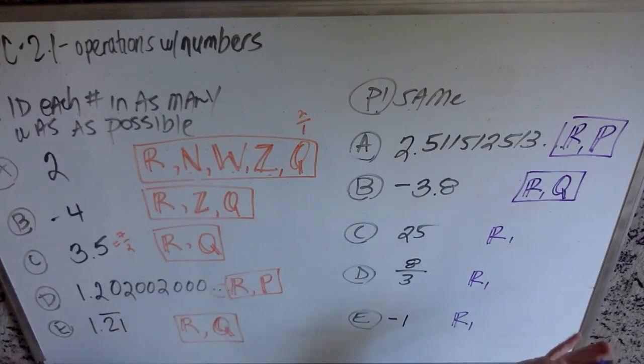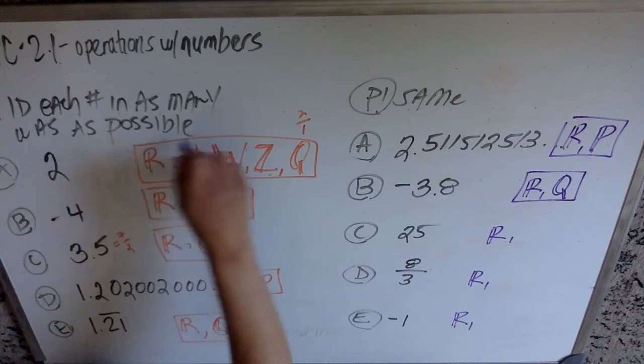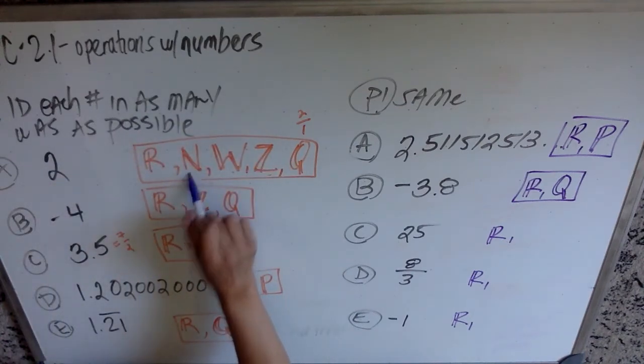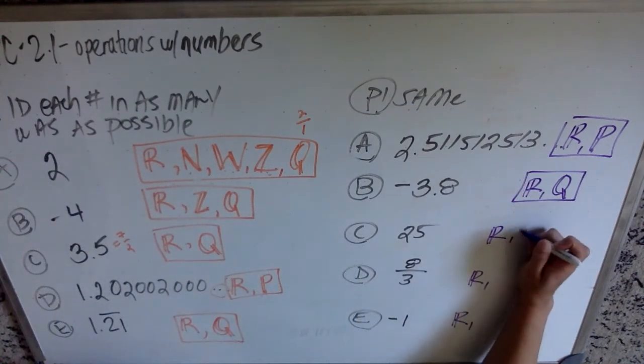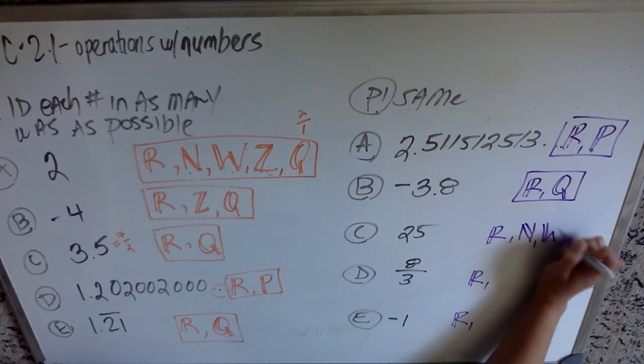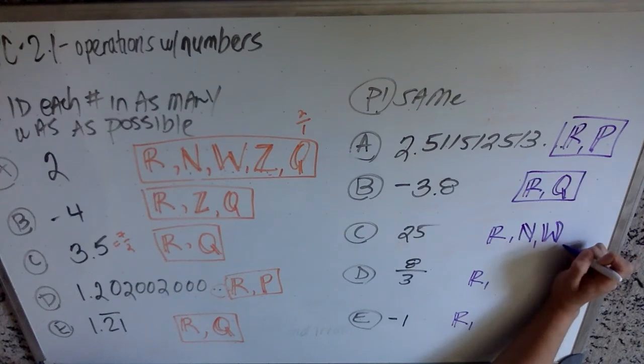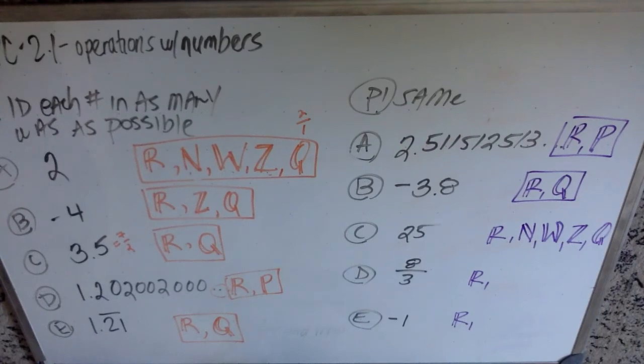25 is all of these things. 25 is going to be the same as up here, where we had, 25 is a counting number, it's a whole number, it's an integer, and it's rational. So I get my N, my W, I'm always really bad at these double lines, my Z, nobody really cares, and there you go, Q.